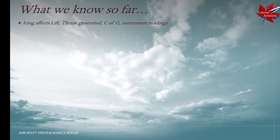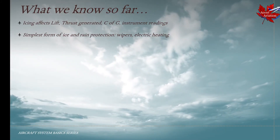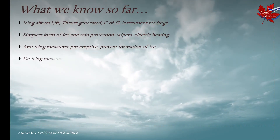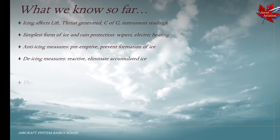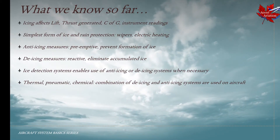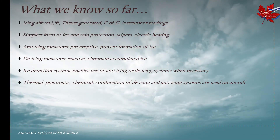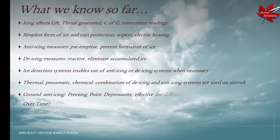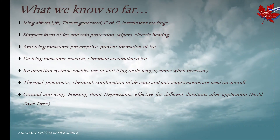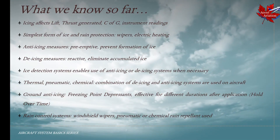In summary, icing affects lift and thrust generated, center of gravity, and instrument readings. The simplest forms of ice and rain protection are wipers and electric heating. Anti-icing measures are pre-emptive and prevent the formation of ice, while de-icing measures are reactive and eliminate accumulated ice. Ice detection systems enable use of anti-icing or de-icing systems strictly when necessary to reduce operational expenses. A combination of thermal, pneumatic, or chemical de-icing and anti-icing measures are used on aircraft. Ground anti-icing operations involve the use of freezing point depressants that are effective for various durations after application, called holdover time. Rain control systems consist of windshield wipers and pneumatic or chemical rain repellants.